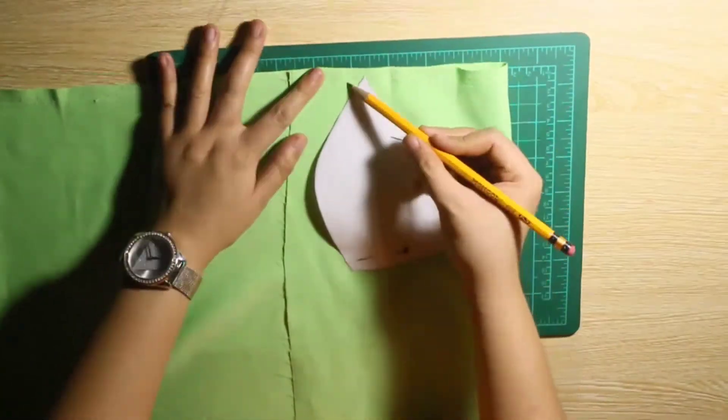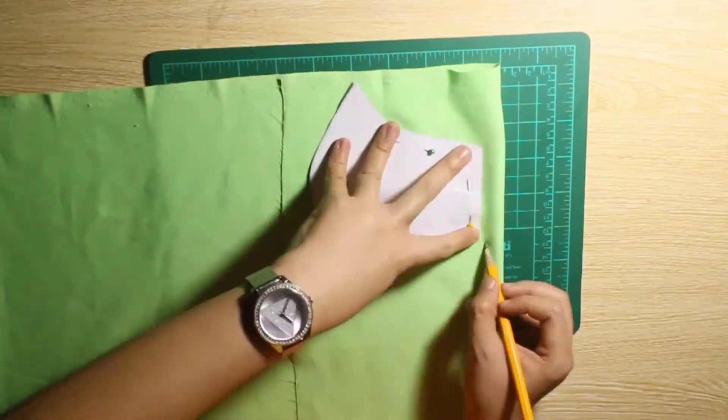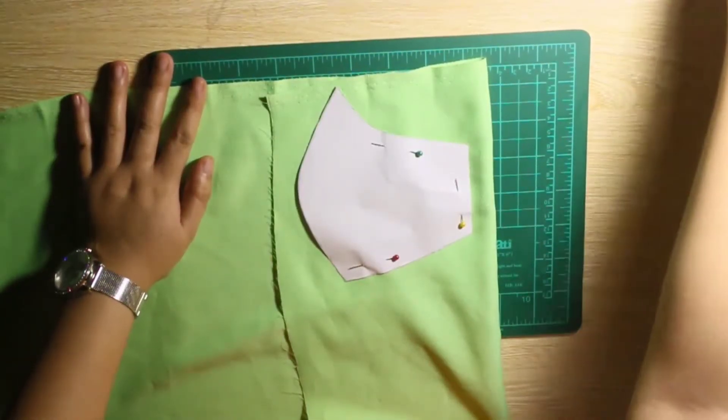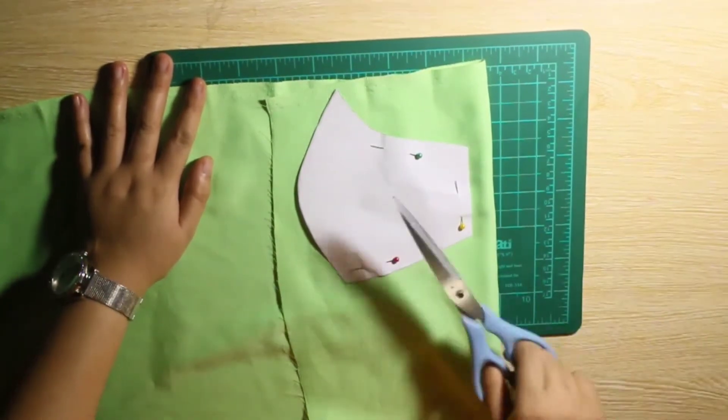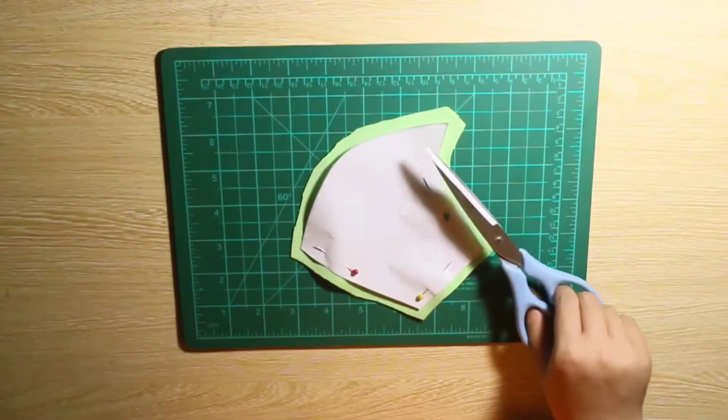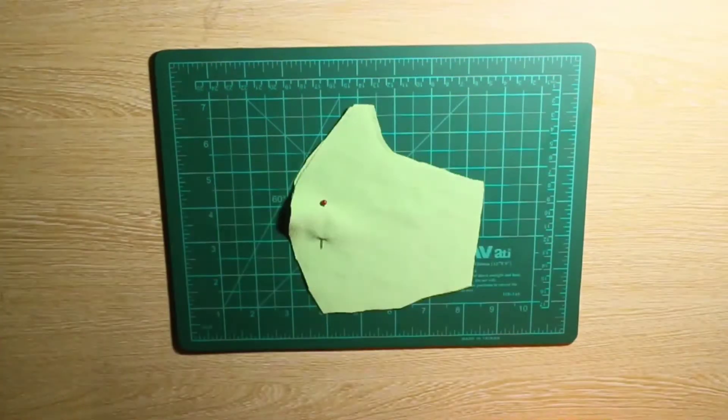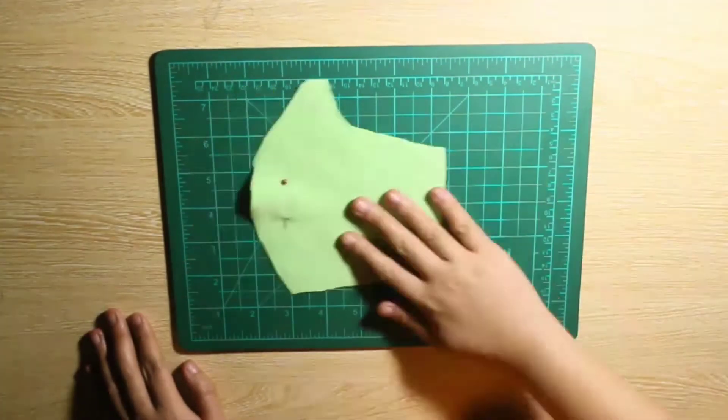Once that's done you wanna trace around the mask but make sure to leave a few centimeters of allowance, since the actual pattern is the actual size of the mask. When you cut that off you can see how much allowance I made. I actually made two pairs of that - one for the front and one for the inside of the mask.